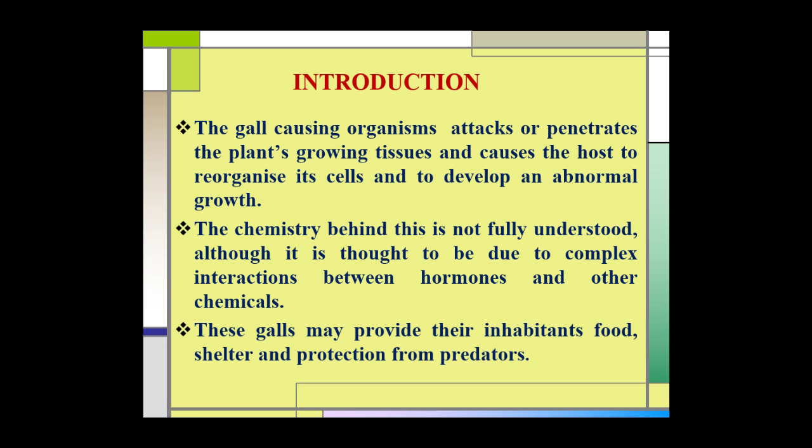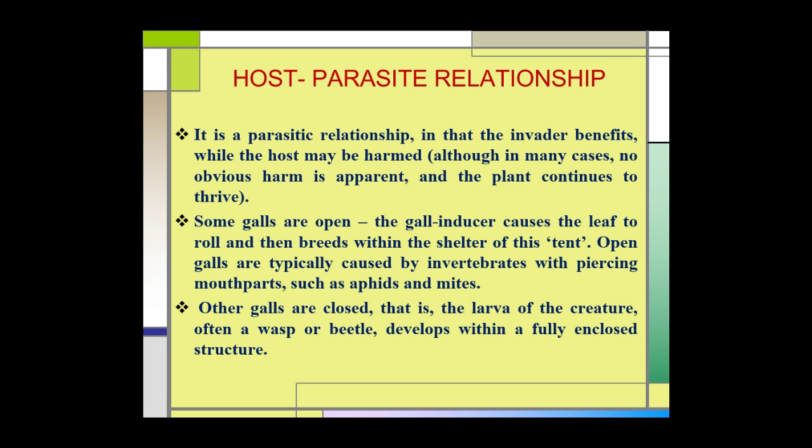The chemistry behind this is not fully understood, although it is believed that the formation of gall is due to the complex interactions between the hormones and other chemicals. These plant galls provide their inhabitants food, shelter, and also protect them from predators. This relationship between the plant and the gall-inducing insect may be regarded as the host-parasite relationship, in which the invader benefits while the host plant may get harmed.